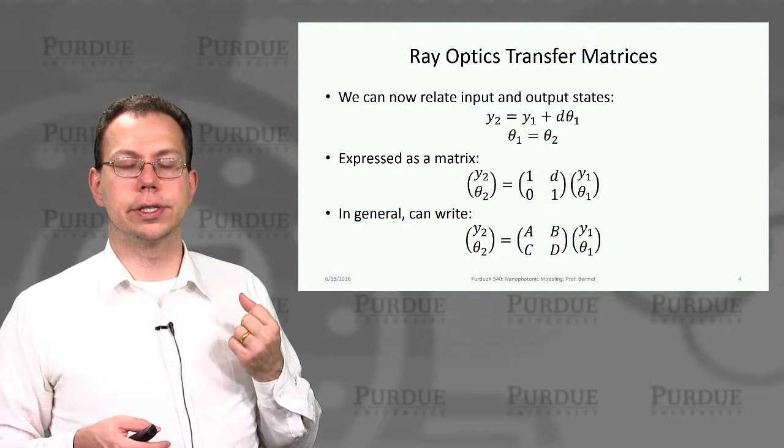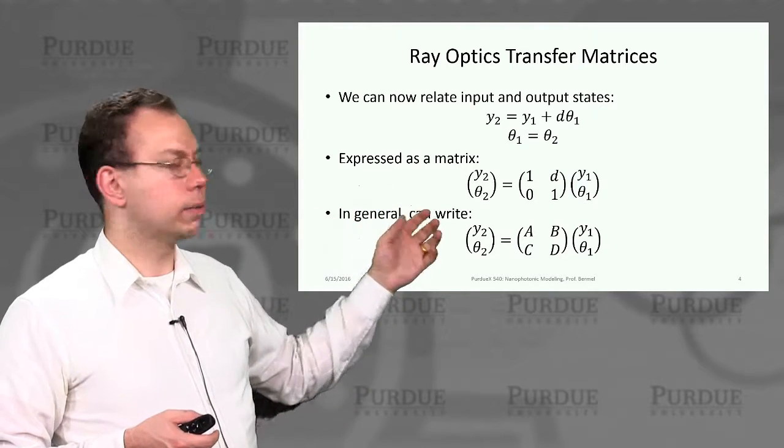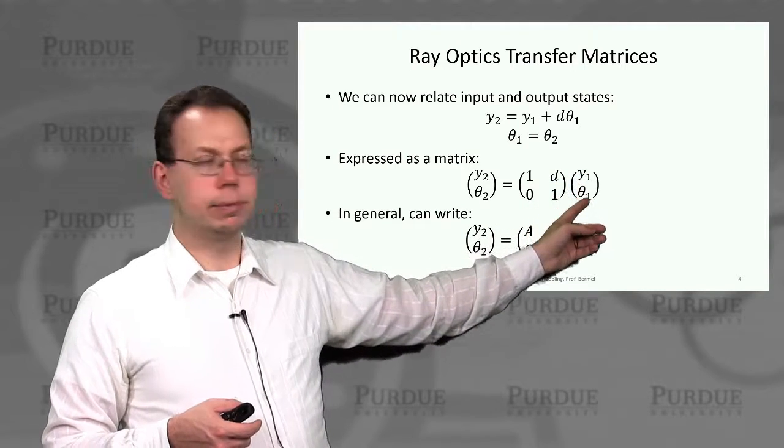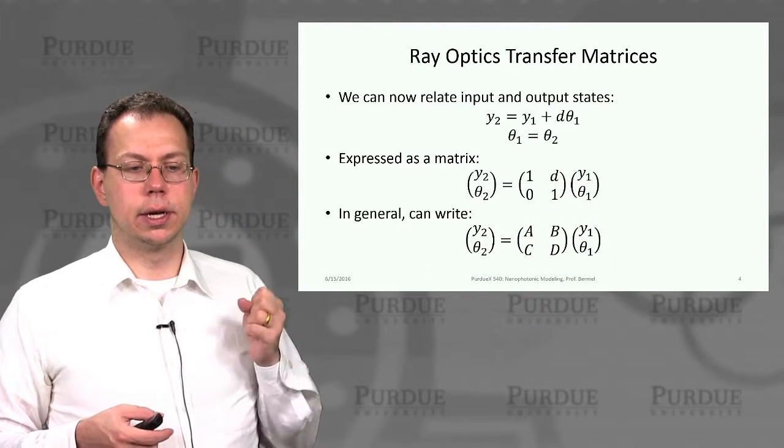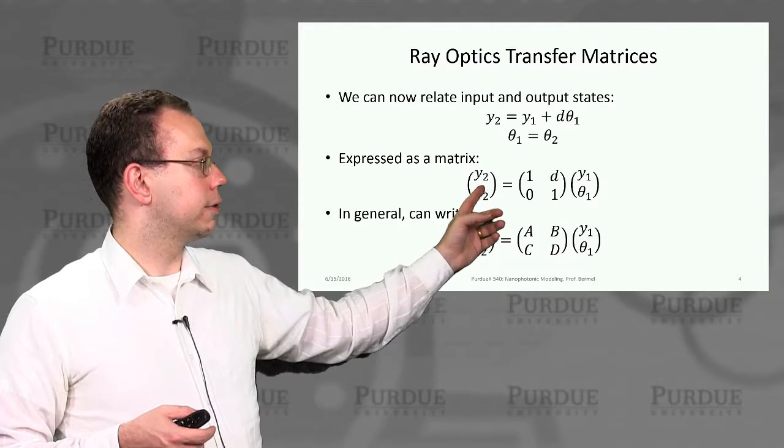When we write that as a matrix for propagation in free space, it becomes (1, d; 0, 1) times (y1, theta 1) equals the output (y2, theta 2) on the left-hand side.